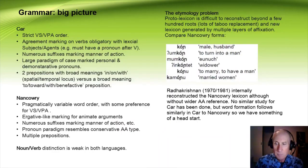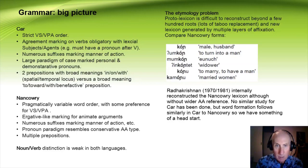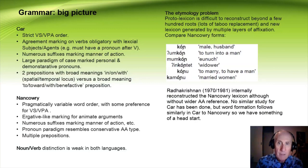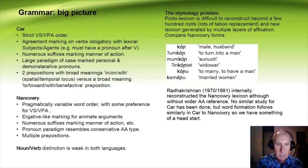The big grammar picture: Ka is strictly verb-initial. There is obligatory agreement marking on verbs with lexical subjects or agents. There are numerous suffixes marking manner of action on verbs. There is a large paradigm of case-marked personal and demonstrative pronouns. And there are two broad prepositions — one with a spatial-temporal locus, and another with a general 'to/towards/benefactive' type sense — and these prepositions do all the prepositional phrase work.